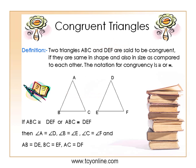Today we are going to learn congruent triangles. Let's start with the definition. Congruent triangles are triangles that have the same size and shape. If two triangles are congruent, then their corresponding sides and angles will be equal.